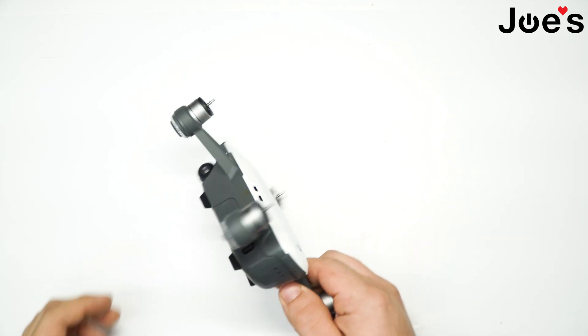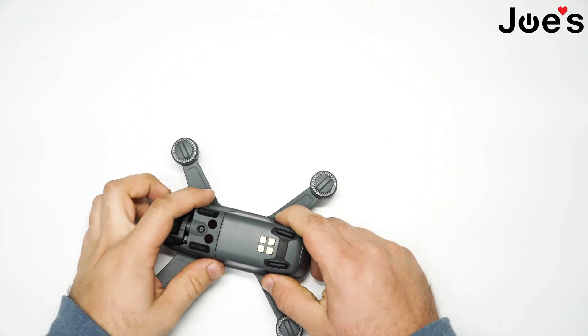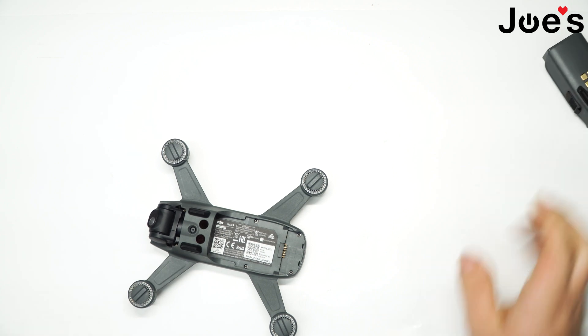To get started we're gonna flip it over, pull the battery out by pulling these two tabs, and place that to the side.